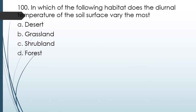Question No. 100: In which of the following habitats does the diurnal temperature of the soil surface vary the most? Desert, Grassland, Shrubland, or Forest. Diurnal temperature variation means during the day the temperature is at one extreme and during the night the temperature is at the opposite extreme. The correct answer is Option 1, Deserts. During the day the temperature of the soil surface is very high, very hot, and during the night it becomes very cold.